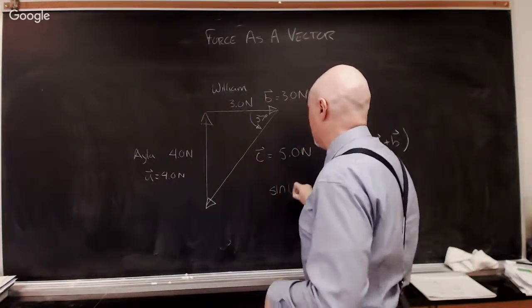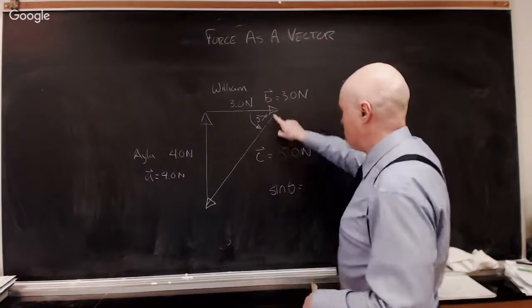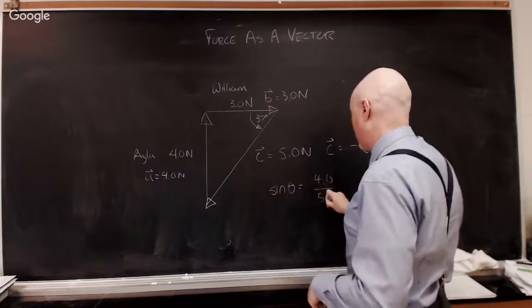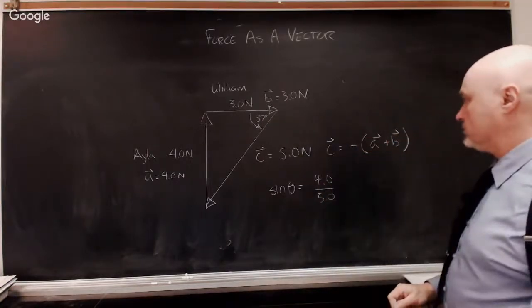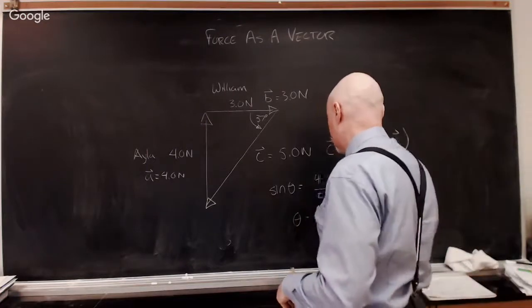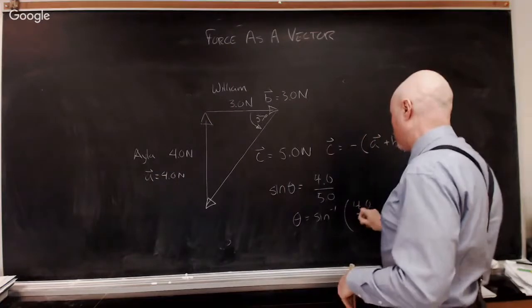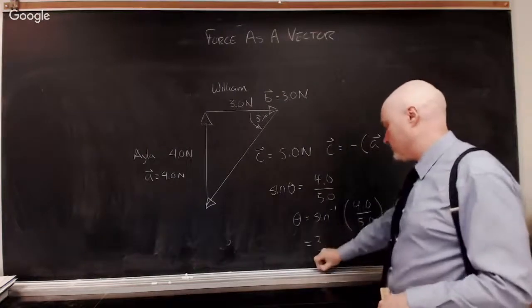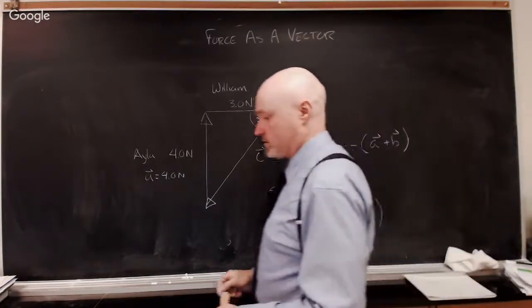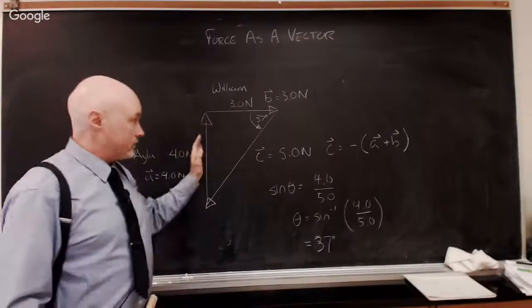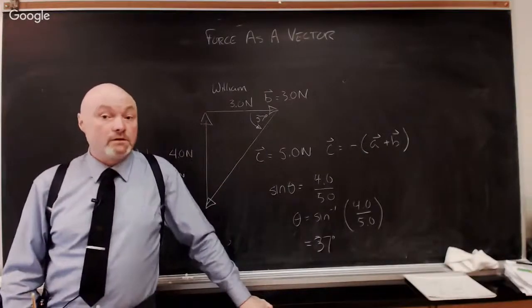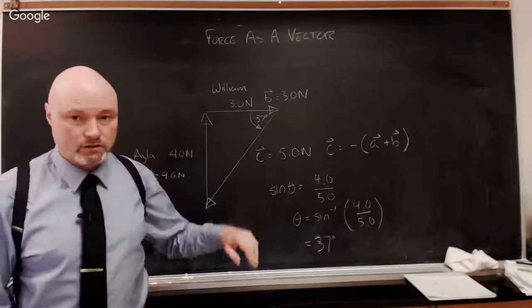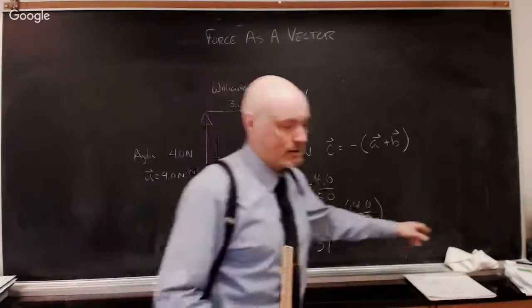So sine of theta is equal to opposite that angle, four over five. Is that right? Yeah? Okay. So theta is equal to the arc sine of four over five. I hope I didn't make a mistake. That is 37, 37 degrees. Okay. So you'll notice as well, equilibrium problems boil down to being basically triangle problems again, solving triangles. This is SOHCAHTOA because I don't like doing sine and cosine law.